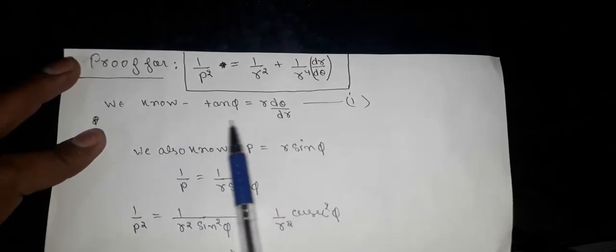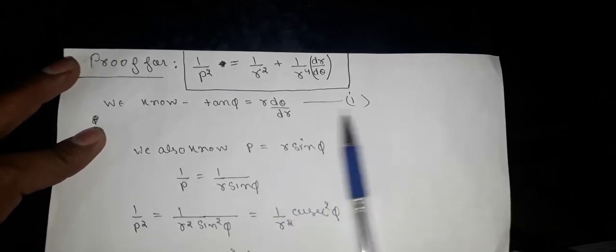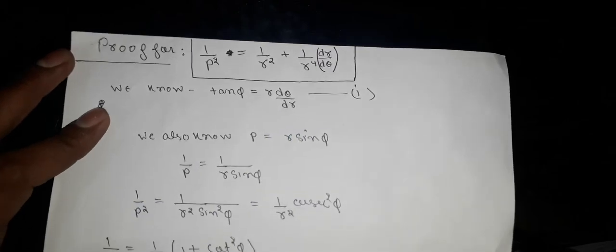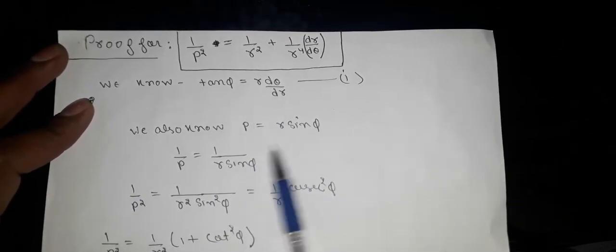We know that tan θ is equal to r dθ/dr, and this is r upon dr/dθ. This is our equation first. The polar curve is p = r sin θ.